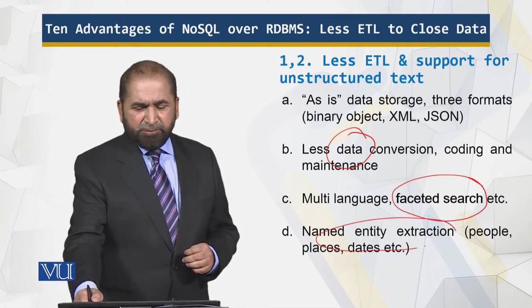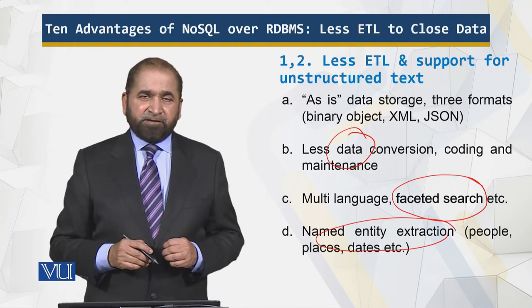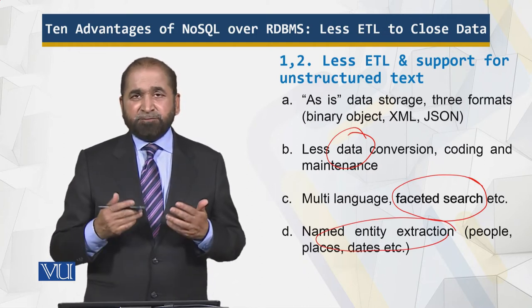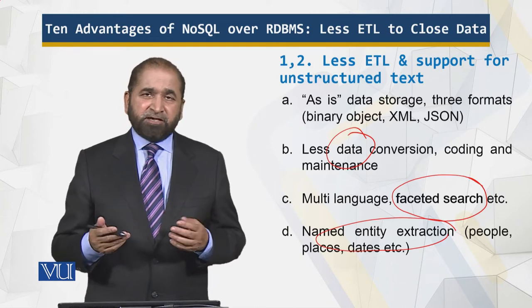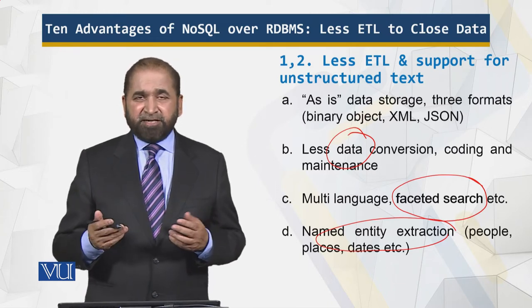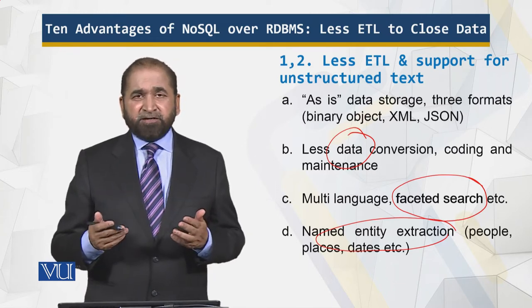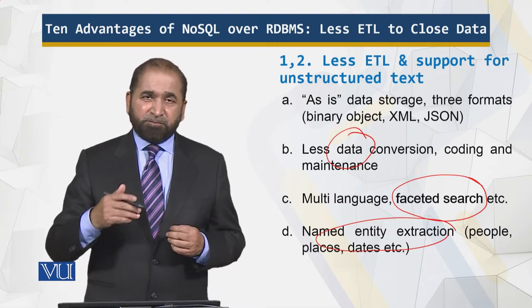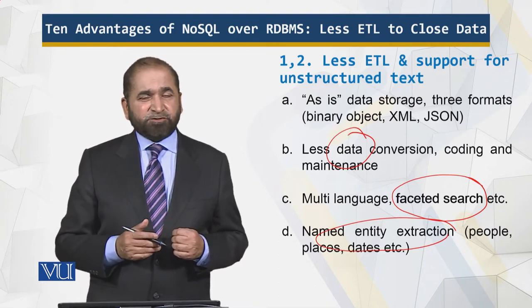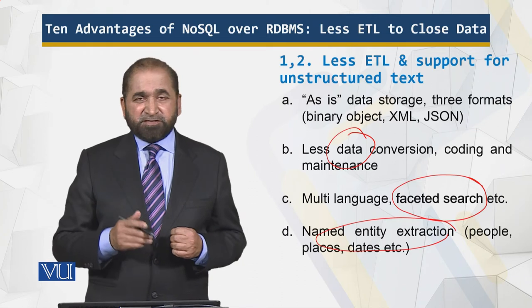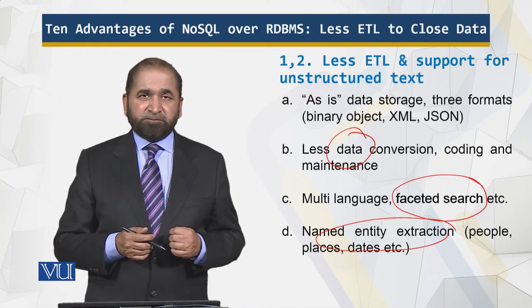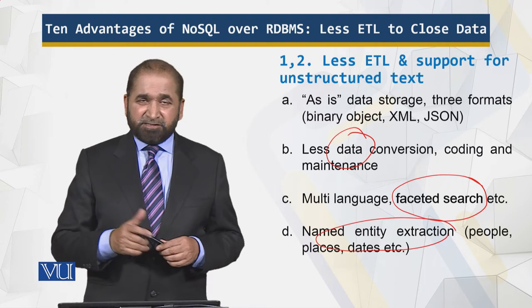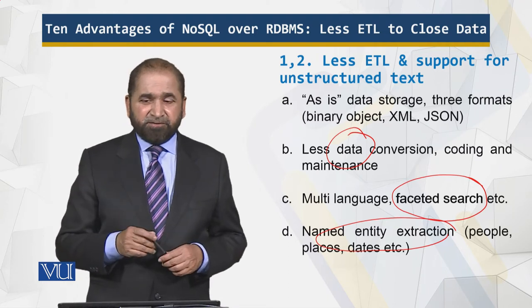Then there is named entity extraction. An entity is something of interest, such as the name of a person, name of a place, a date, or name of an organization. Those things are supported as part of the NoSQL solution, which are not available in the relational RDBMS model. This is a big advantage.